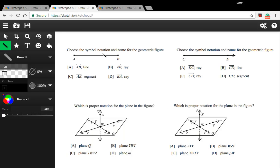This first one up here says choose the symbol notation and name for the geometric figure. So this has got two endpoints, A and B, so this is a line segment. And actually there's only one that says segment, so it's got to be this one. And it's got the correct symbol up top, that line without any arrows on it. So the correct answer there is AB segment.